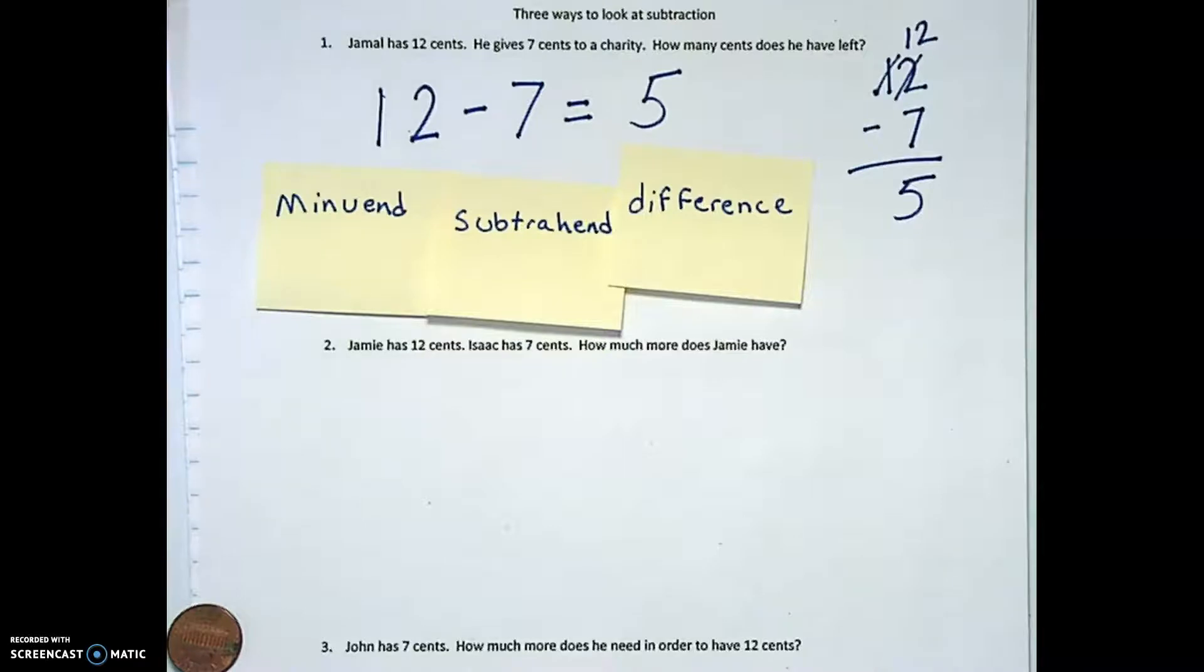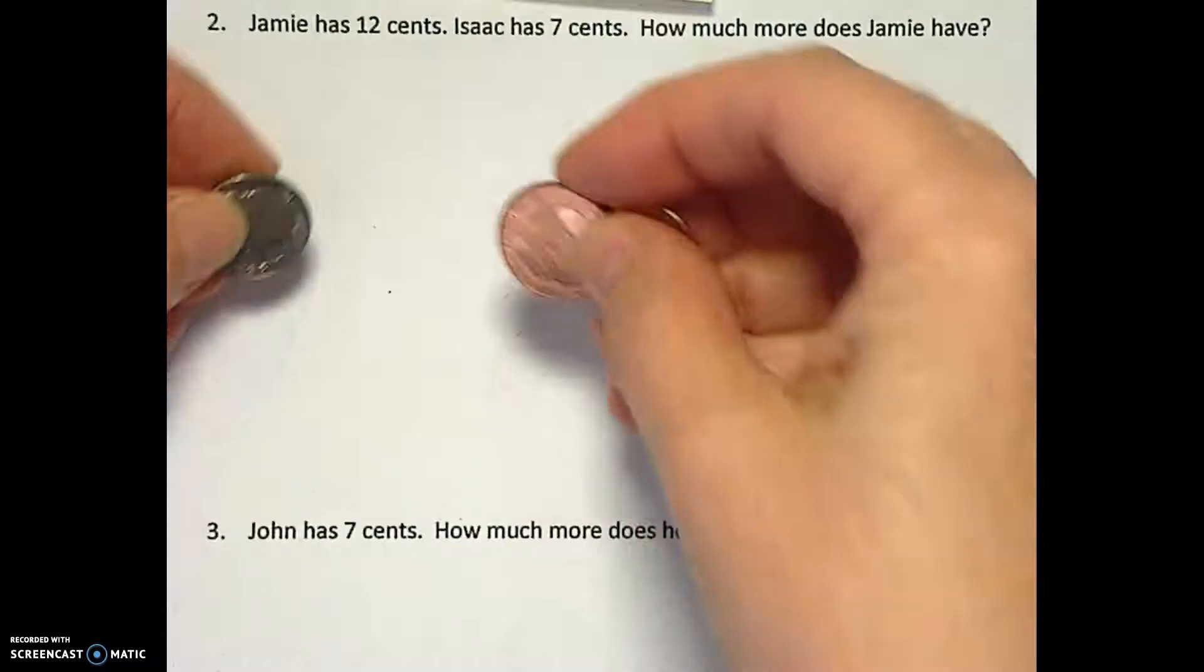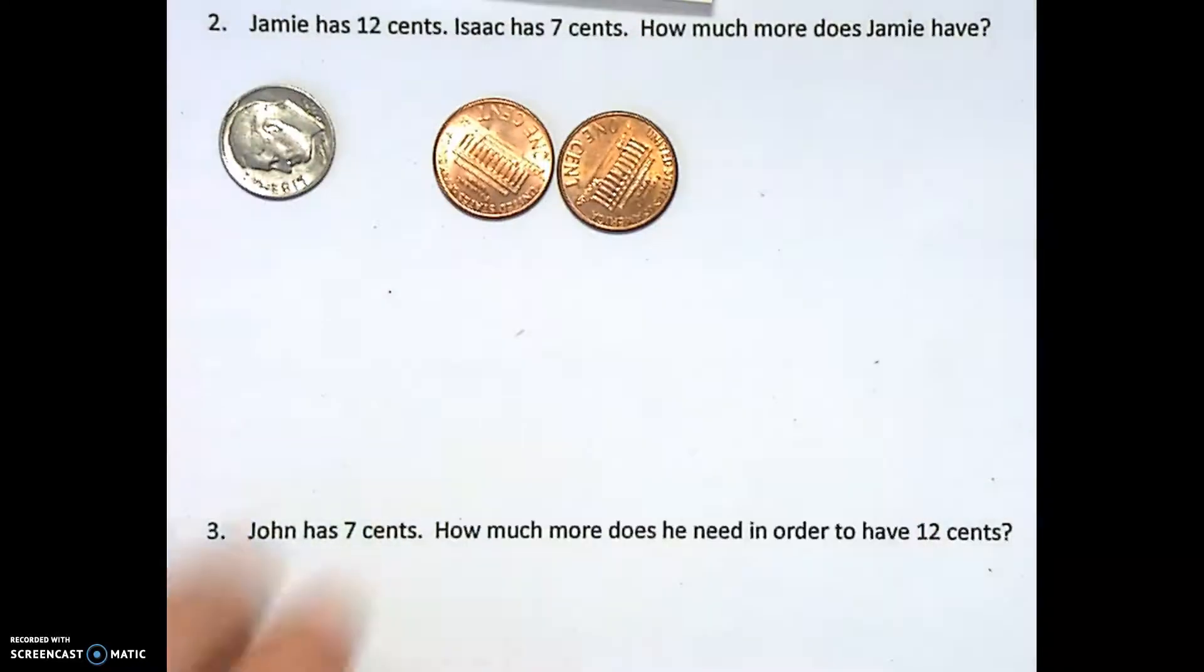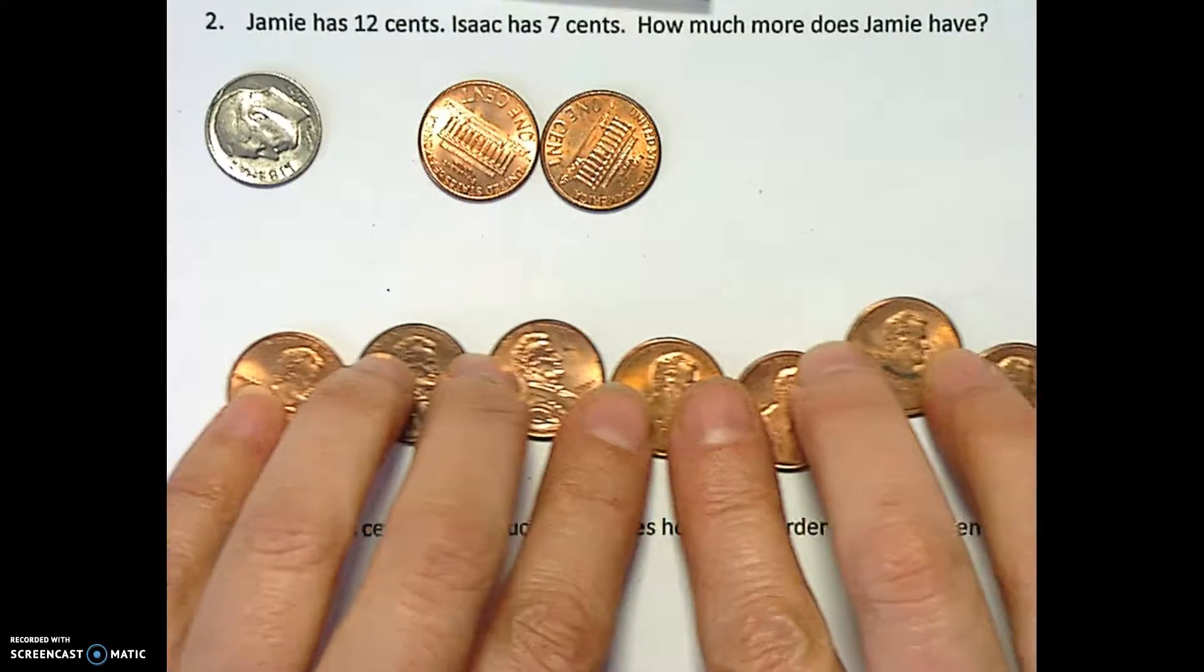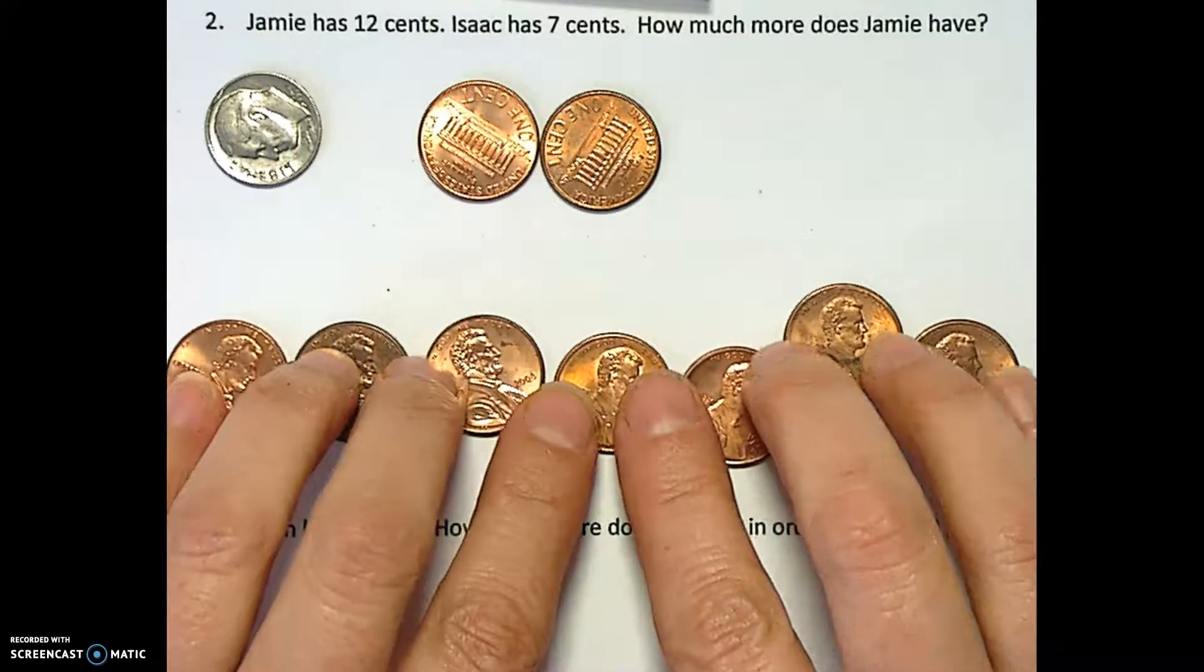Let's look at the next example and see what kind of concept that is. Jamie has 12 cents. And Isaac has 7 cents. Here's Isaac's 7 cents. Maybe I zoomed in a little too far. Isaac has 7 cents. How much more money does Jamie have? So this one is looking at it a little bit differently, but it's kind of hard to compare these because of that dime. So we're going to make an exchange.